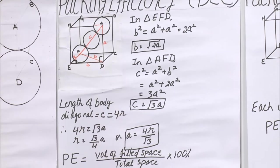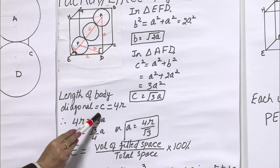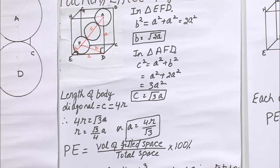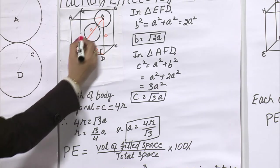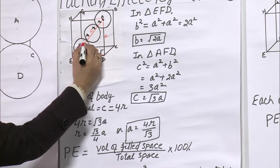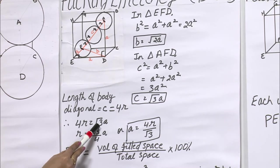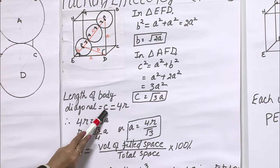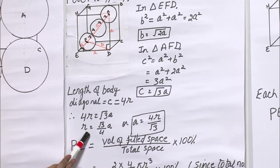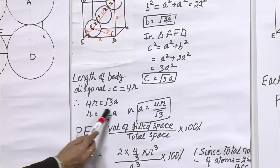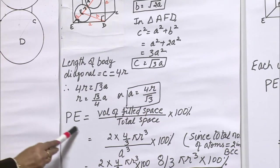The length of the body diagonal C equals 4R, because along that diagonal we pass through one radius, then a full diameter (2R), then another radius — totaling 4R. So C = 4R = √3·A, which gives us R = (√3/4)·A, or equivalently A = 4R/√3. Now substituting into the packing efficiency formula: the filled volume is 2 atoms × (4/3)πR³, and the total volume is A³ = (4R/√3)³.